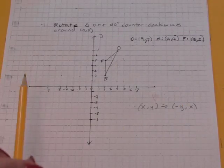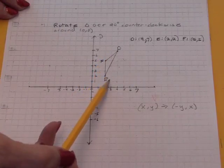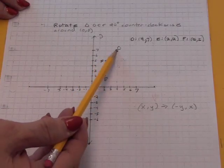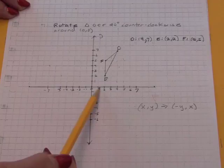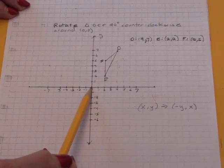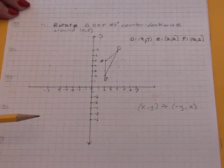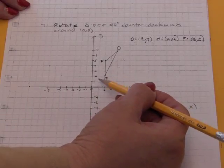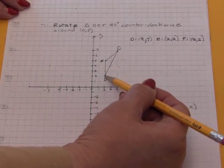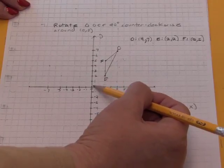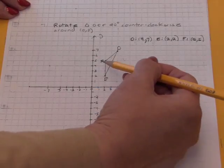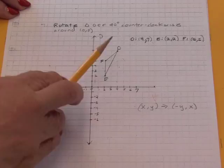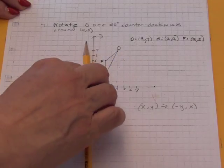Now we're going to rotate triangle DEF counterclockwise around the point (0,0). When we do a rotation, we imagine that every point is like connected by a rigid axle to the center, which is (0,0), and we rotate around that center.